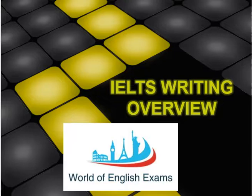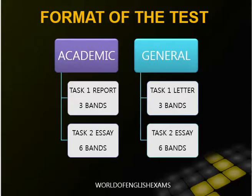Let's begin by understanding the format of the IELTS writing test with reference to academic and general training. For the academic version, Task 1 would be a report and Task 2 would be an essay. So academic test takers write both a report and an essay. The score is divided as follows: 3 bands are allotted for Task 1, whereas 6 bands are allotted for essay writing.